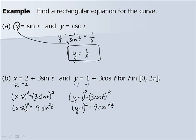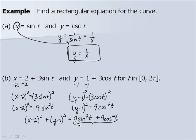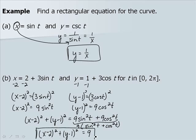With a circle, we add both sides together: x minus 2 squared plus y minus 1 squared equals 9 sine squared t plus 9 cosine squared t. Factoring out 9 and applying the Pythagorean identity gives x minus 2 squared plus y minus 1 squared equals 9 — a circle with center (2, 1) and radius 3.